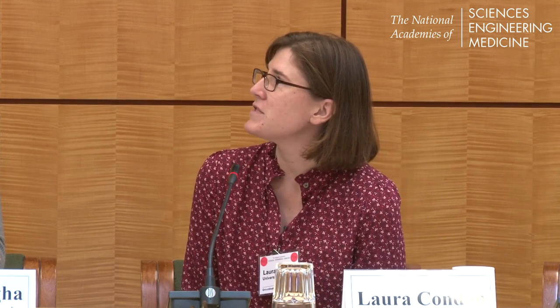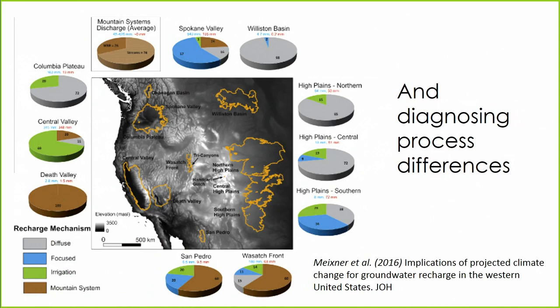This figure illustrates the concept of scale, which has been talked about a lot, especially this morning. Models are a way that we can bridge some of the scaling gaps we have, especially for large-scale decision-making — covering really large-scale systems but also at a scale that's relevant for planning. This is also important if we want to use physically-based models to better understand what's going on with processes.